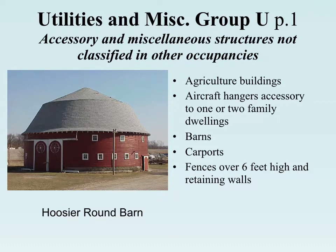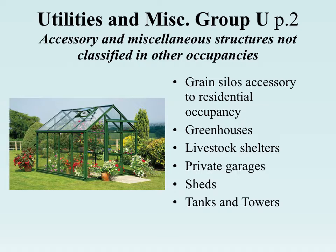The last group is U — Utilities and Miscellaneous. This is essentially the catch-all: if it doesn't fit anything else, it's a U. This includes agricultural buildings, aircraft hangars that are part of a private residence, barns, carports, fences over six feet high, grain silos, greenhouses, livestock shelters, and private garages.